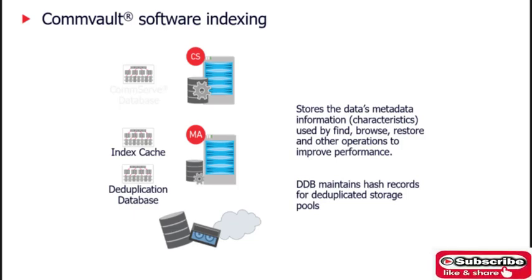The index cache contains detailed job and object index information and characteristics. That means it contains the information exactly where a particular piece of data is being stored on a storage target device.